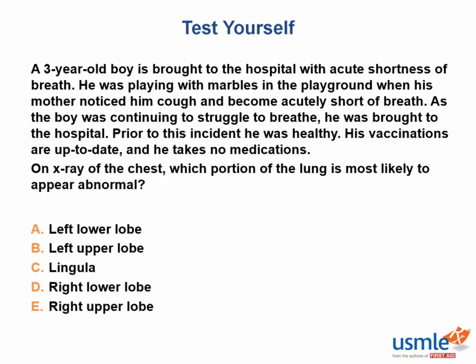Let's test ourselves. A 3-year-old boy is brought to the hospital with acute shortness of breath. He was playing with marbles when his mother noticed him cough and become acutely short of breath. On chest X-ray, which portion of the lung is most likely to appear abnormal? The answer is the right lower lobe. Acute shortness of breath in a healthy young child is most often due to aspiration of small objects. The right main bronchus is more vertical and wider than the left, so aspirated particles are more likely to lodge at the junction of the right inferior and right middle bronchi. If the object is radiopaque, it will be visible on chest X-ray, and the right lower lobe may appear more opaque due to volume loss from lack of airflow.